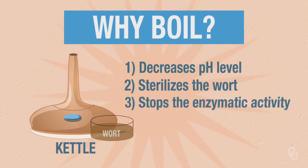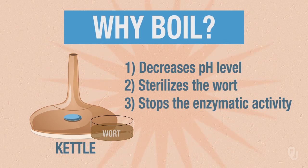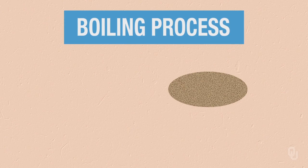Boiling also stops any enzymatic activity. At this point, we don't want the enzymes that were active in the mashing process to be active. And finally, a vigorous boil is going to help us coagulate the proteins that were necessary in the previous steps, but we want those to start to coagulate into larger proteins to fall out of solution so that they won't cloud the beer later — and we'll have an attractive, transparent beer at the end of the process.